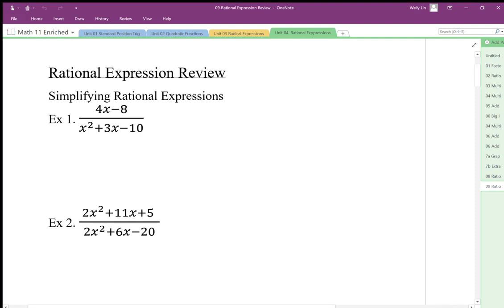Here we have 4x minus 8. To simplify this expression, we want to factor the 4 out. The denominator, we're looking for two numbers that multiply to negative 10 and have a difference of 3. So we're looking at x plus 5, x minus 2.